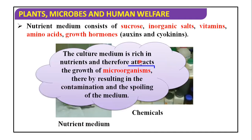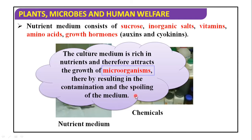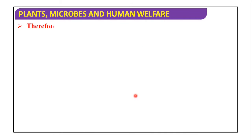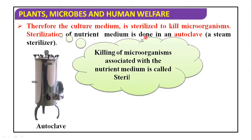One disadvantage is that the culture medium is rich in nutrients, so microorganisms can be attracted here and grow, resulting in contamination. They can contaminate and spoil the medium. So, what we have to do is culture in a sterile medium — sterilized. To kill microorganisms, sterilization of the nutrient medium is done in an autoclave.